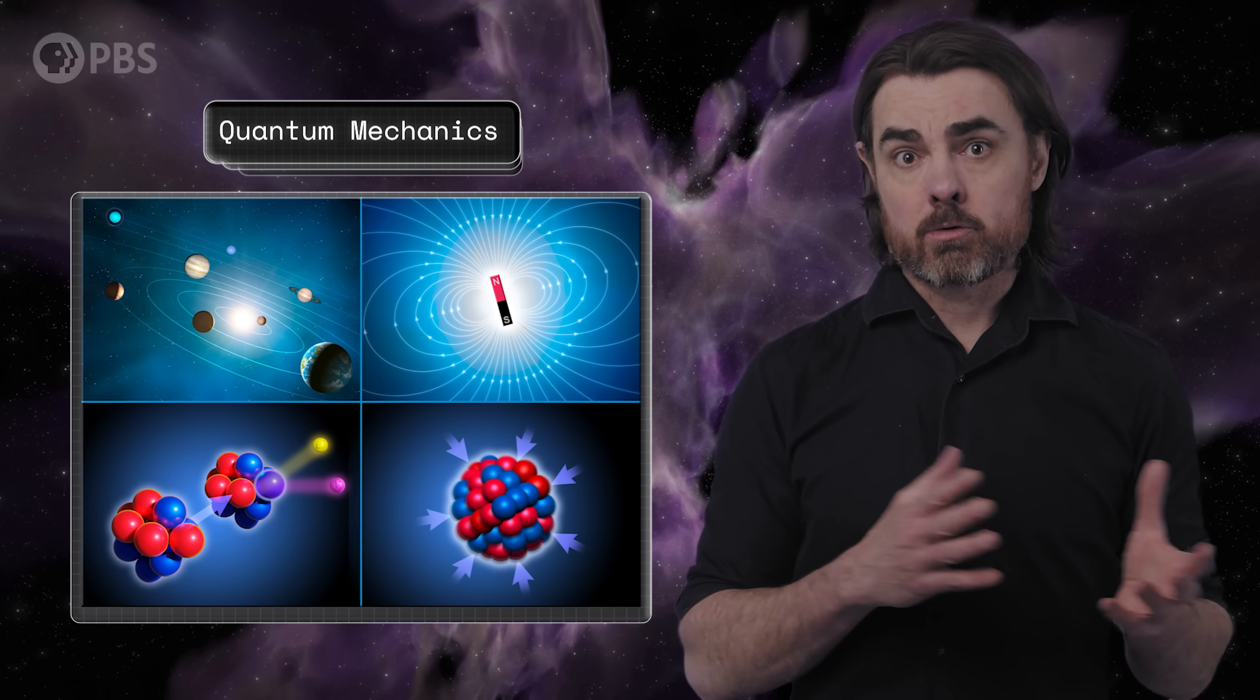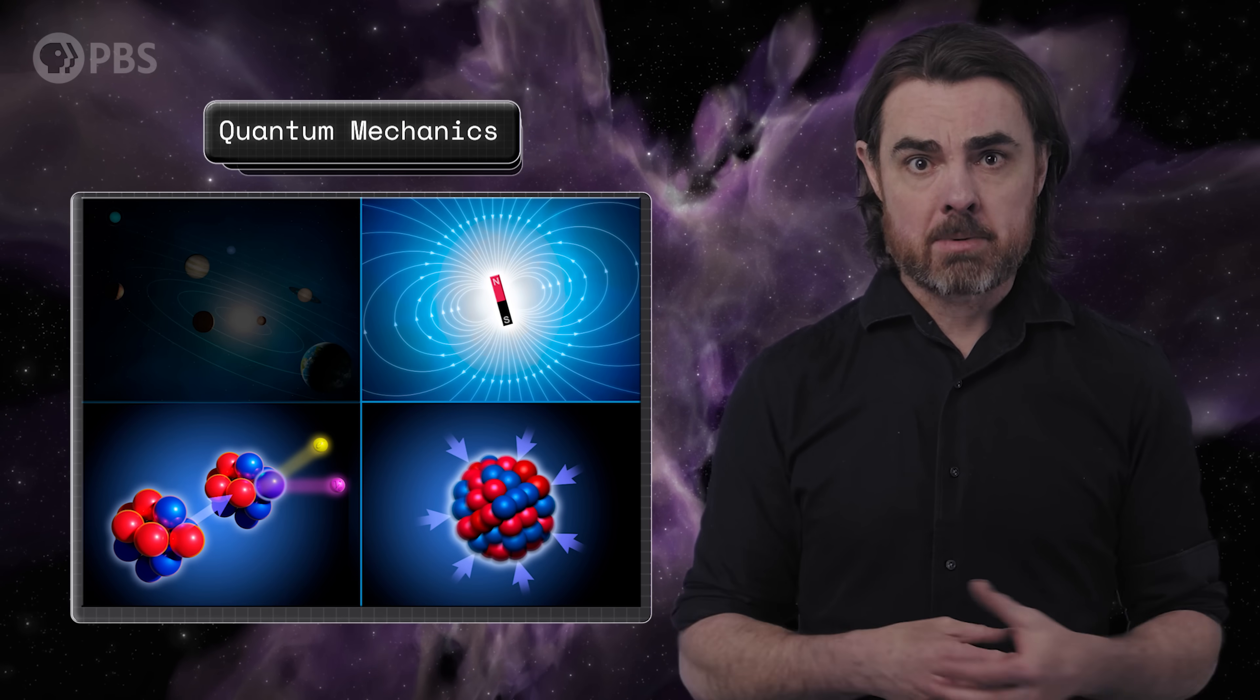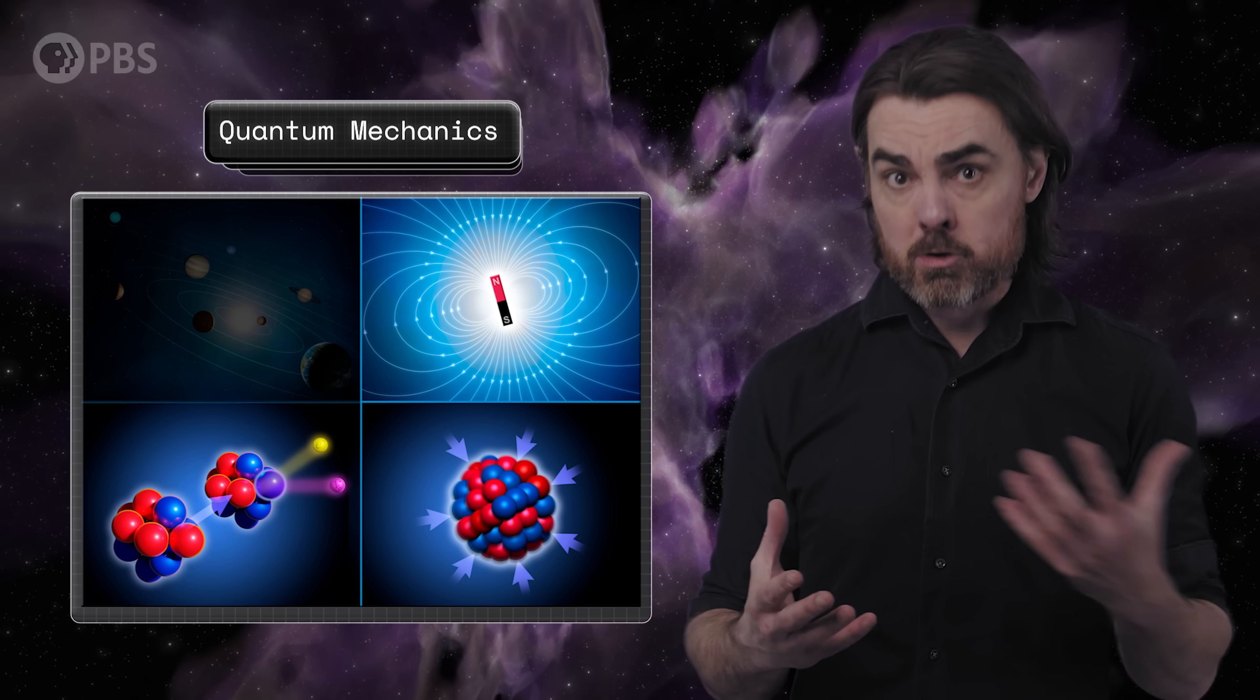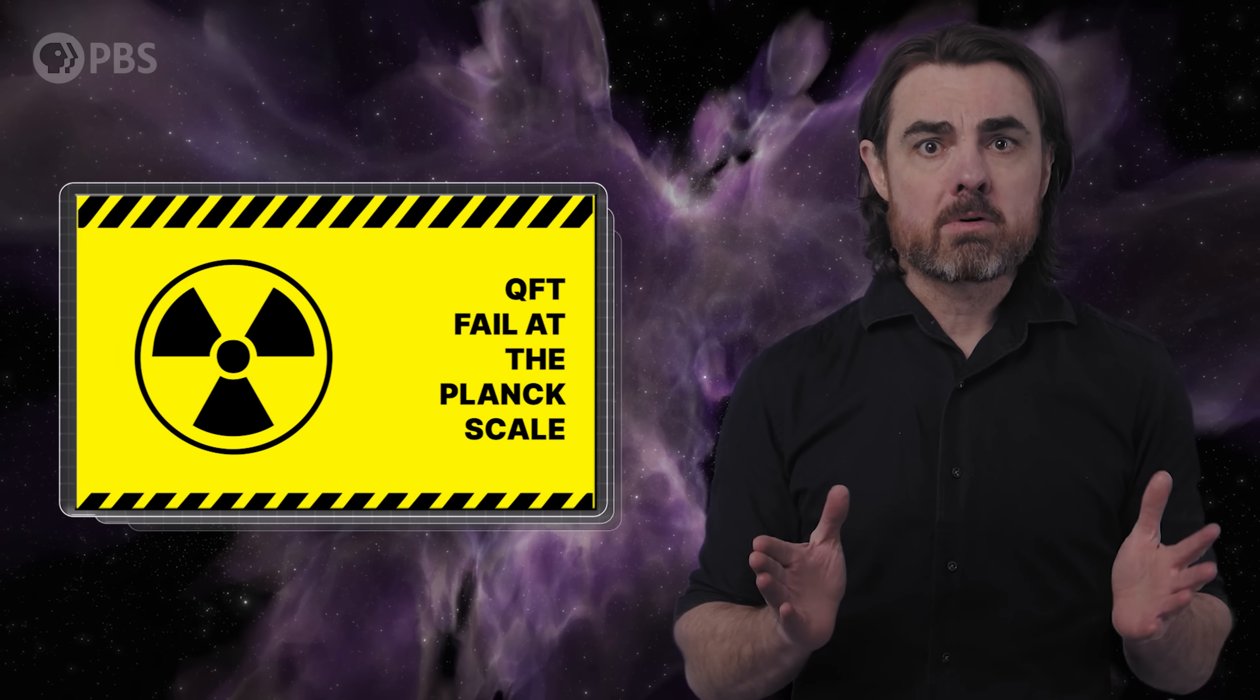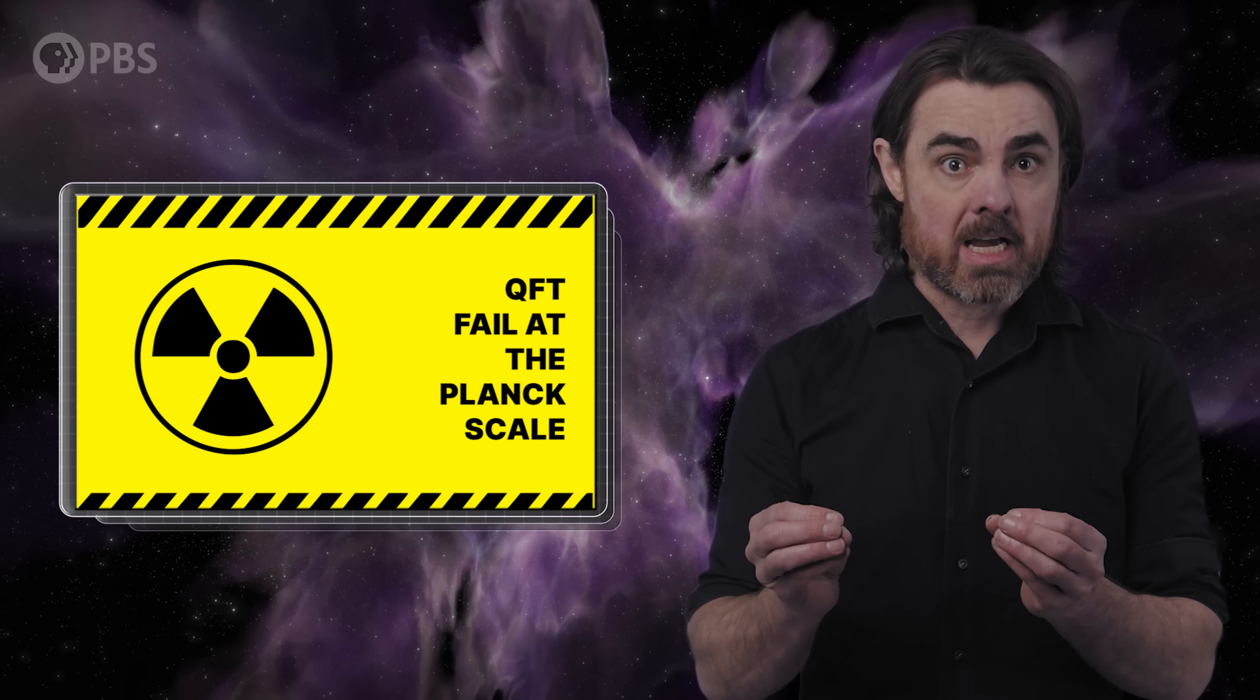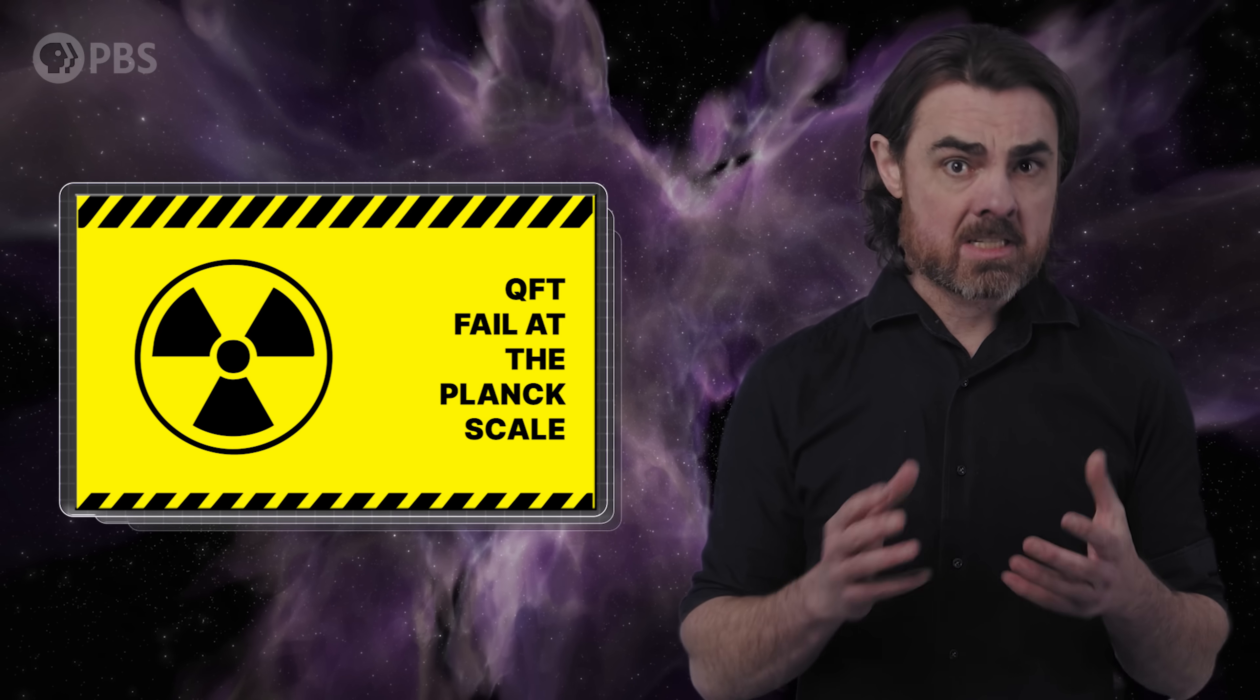Now, we know for sure that quantum mechanics also has its limits to validity. Quantum mechanics doesn't include gravity, so we know that it must be what we call an effective theory, emergent from some deeper theory, just as classical physics emerges from the quantum. We know for sure that any of our quantum field theories fail at the Planck scale, lengths smaller than around 10 to the power of minus 35 meters, or energies larger than 10 to the power of 28 electron volts.